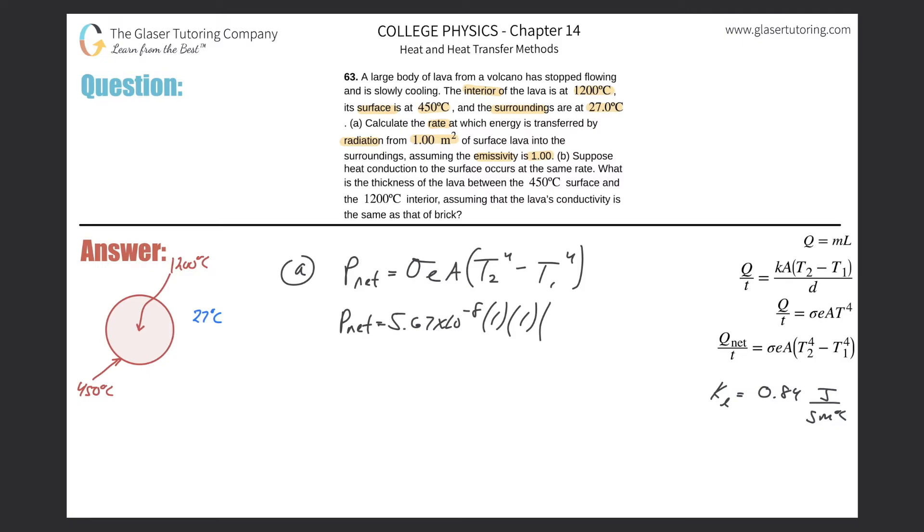So here we're going to have to remember it has to be in Kelvin, so we have to take the 450 and add 273 to it. So that's going to be 723. So this is 723 to the fourth, then minus the surroundings which are at 27, add 273 to that—so that's 300 raised to the fourth.